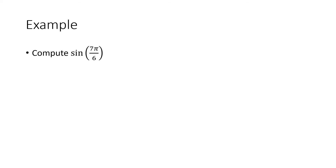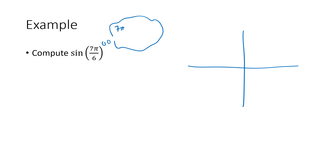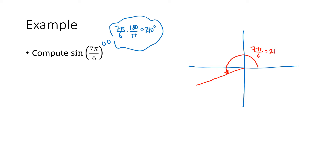Let's look at an example. If we want to compute the sine of seven pi over six, let's roughly sketch this angle. If it helps to convert to degrees, seven pi over six multiplied by 180 over pi works out to 210 degrees. So 210 is a little bit more than 180, so if we draw this angle it goes just a little bit past 180 degrees, giving us a terminal side down there — that's seven pi over six, which is 210 degrees.